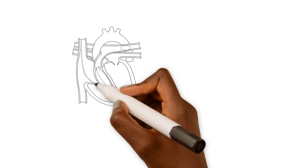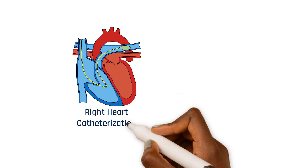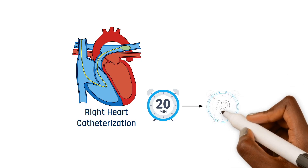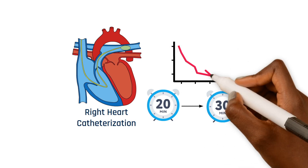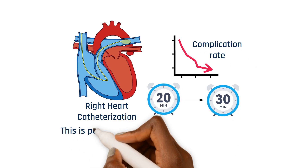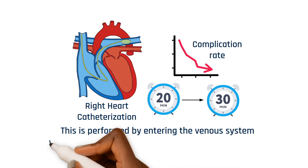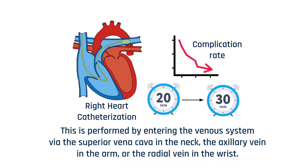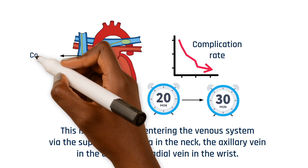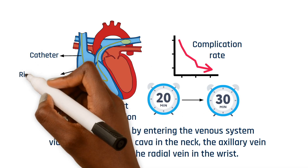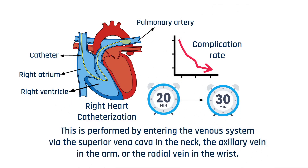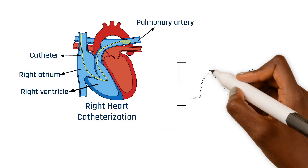The gold standard used to diagnose pulmonary hypertension is a right heart catheterization. It's an outpatient procedure that usually takes approximately 20 to 30 minutes with a very low complication rate. This is performed by entering the venous system via the superior vena cava in the neck, the axillary vein in the arm, or the radial vein in the wrist. This small catheter is advanced via the vein into the right atrium, the right ventricle, and then eventually into the pulmonary artery.